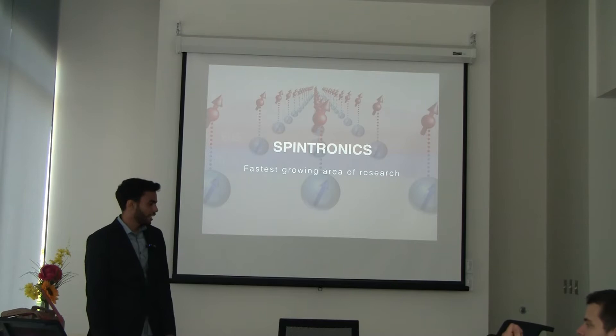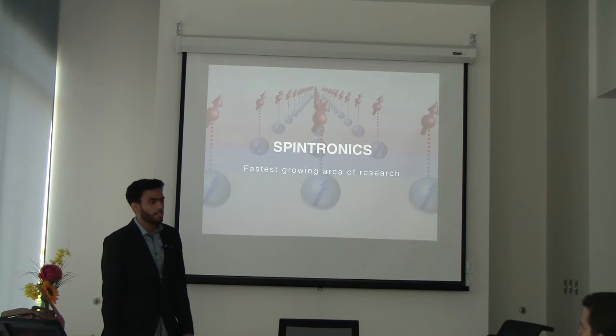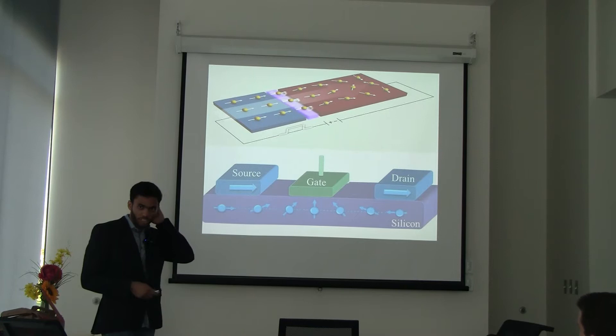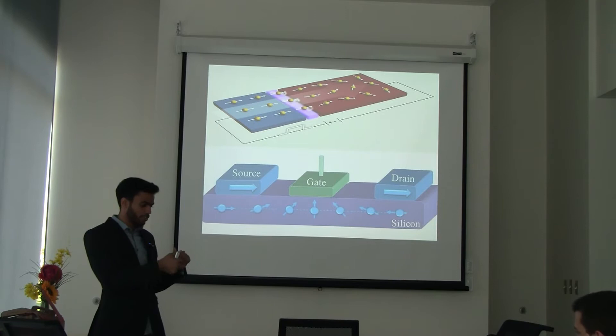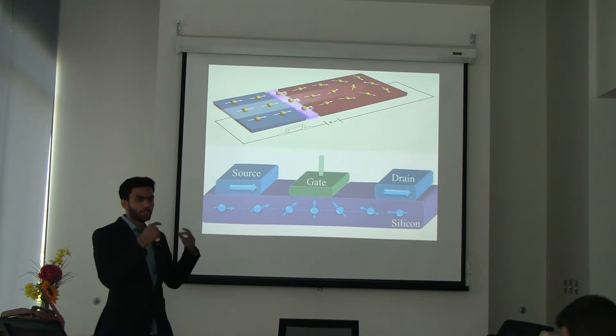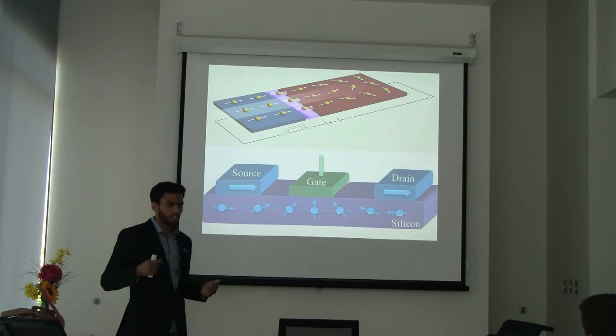That's why spintronics is considered the fastest growing area of research. A typical system encountered in spintronics is one in which you have different materials, each enforcing a different orientation of spins. When you connect those together, you are able to manipulate the spin of the system as a whole, and that opens up the possibility of many applications like logic gates, magnetic memories, and other applications.